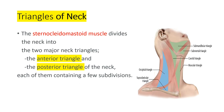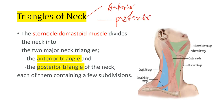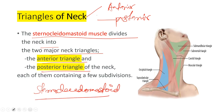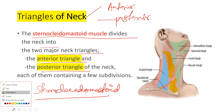In this video we will be talking about the triangles of the neck. The sternocleidomastoid muscle divides the neck into two major neck triangles: the anterior triangle and the posterior triangle. So the sternocleidomastoid divides the neck into two triangles, that is anterior and posterior.